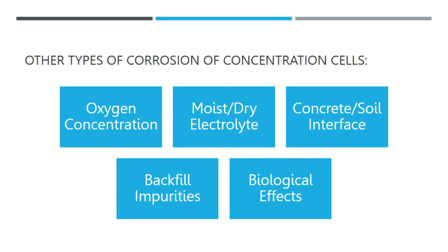Other types of concentration cell corrosion include oxygen concentration, moist/dry electrolyte, concrete-soil interface, backfill impurities, and biological effects. Regarding oxygen concentration: a material exposed to an electrolyte with low oxygen content will typically be anodic to a material exposed to high oxygen content. The worst-case scenario is when backfill is placed around a buried pipeline or tank, as a sizable amount of oxygen is present in the backfill during the excavation and backfill process. The metal may also experience this if exposed to locations with varying levels of oxygen.